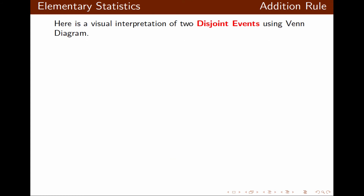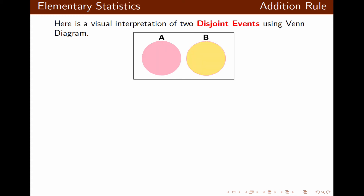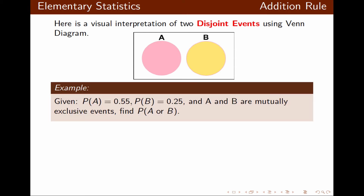Now let's look at the visual interpretation of two disjoint events. Basically, the two circles for the two events do not overlap — they have nothing in common.